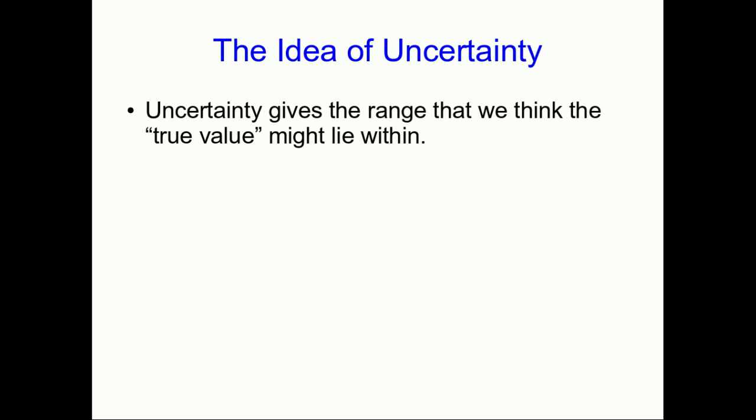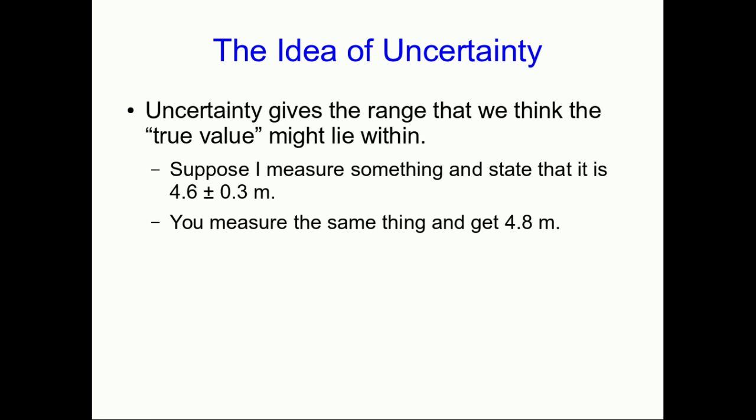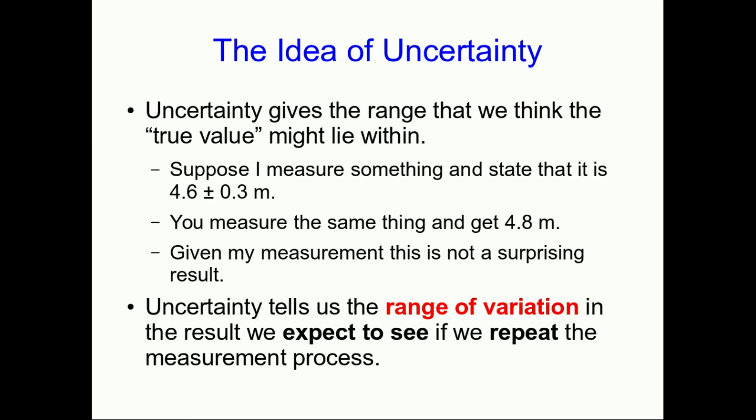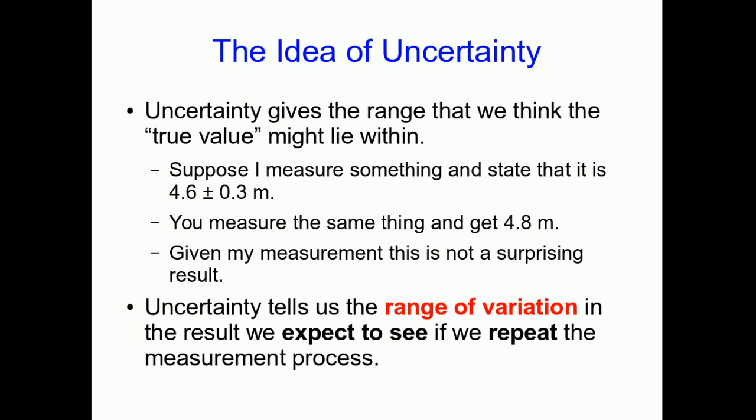So the underlying idea of an uncertainty is that it's a range that you believe the true value might lie within. So if I measure something and state that it's 4.6 plus or minus 0.3 meters and then you measure the same thing and let's say you don't know an uncertainty but you get 4.8 meters. Well is this surprising? No. Your measurement lies within the range that I stated the value should lie within and so your measurement is consistent with mine and we shouldn't be surprised by it even though it's different from what I stated as my measurement.